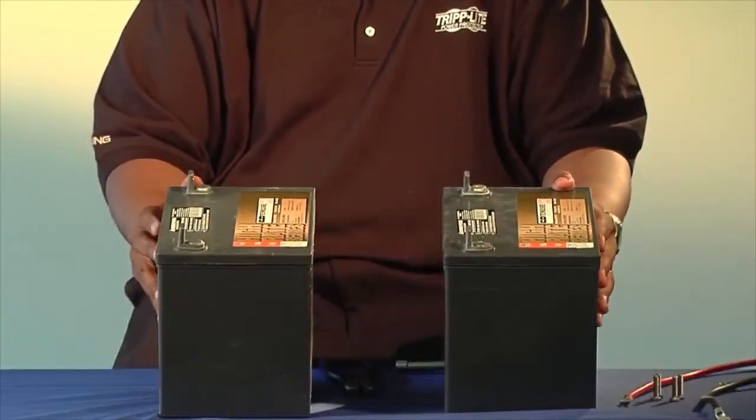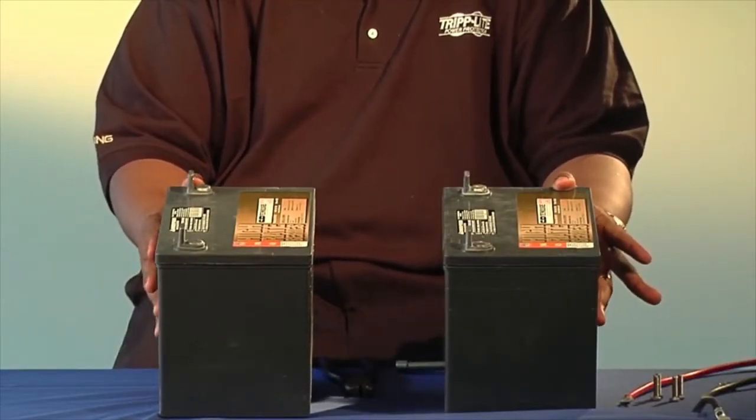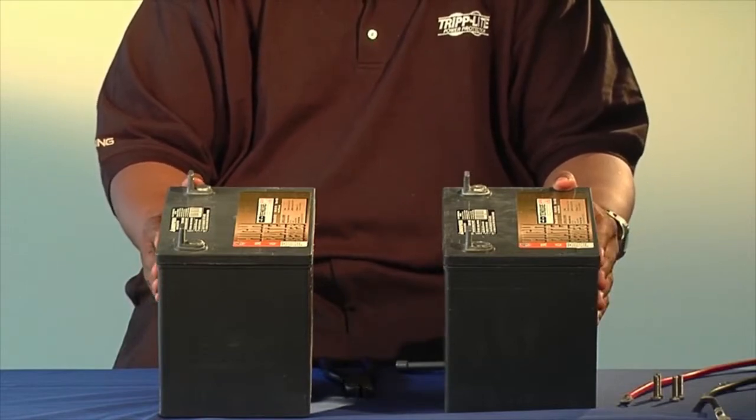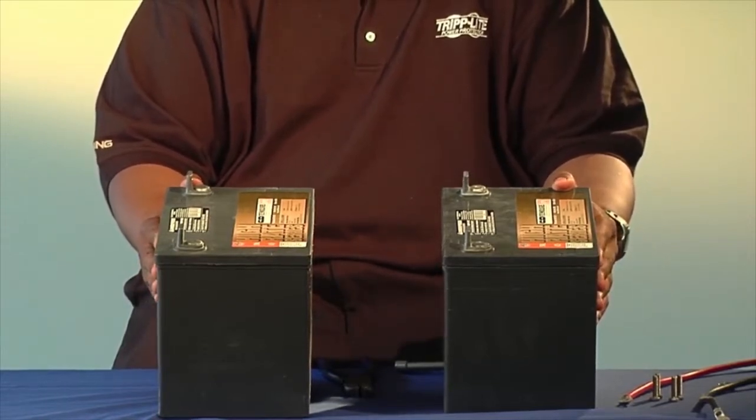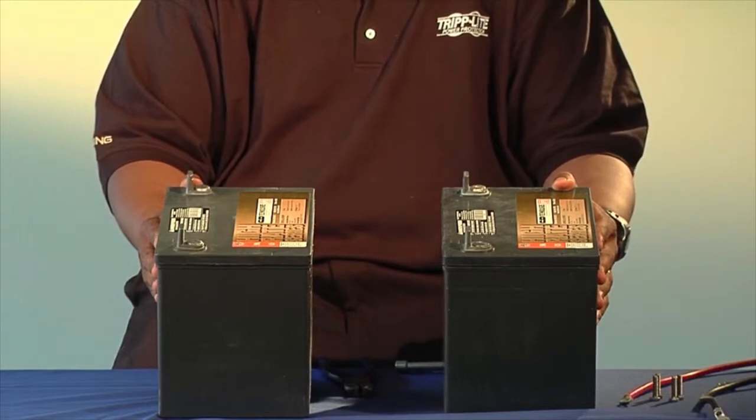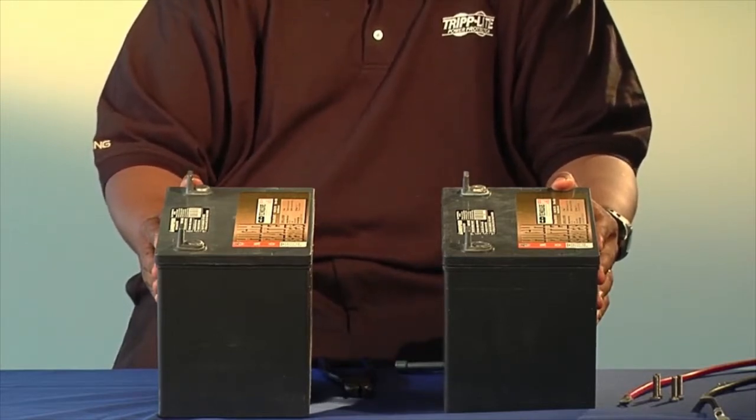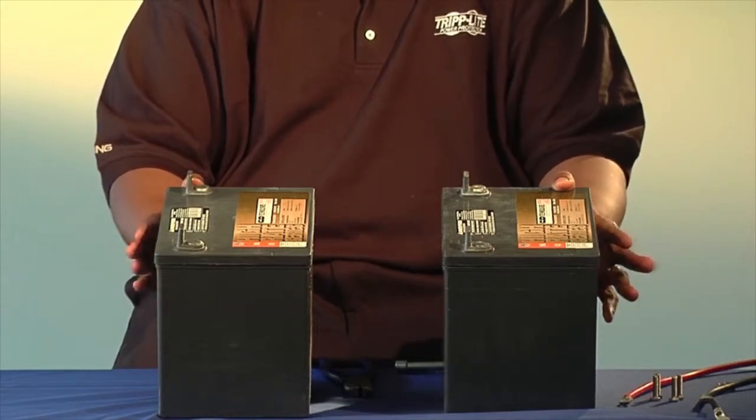Parallel connections increase the ampere hours of two batteries. For example, if we had two 6-volt batteries at 6 amp hours, once we put the two batteries in parallel, they would become one 6-volt battery at 12 amp hours. Let's begin.